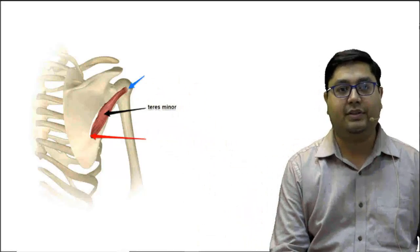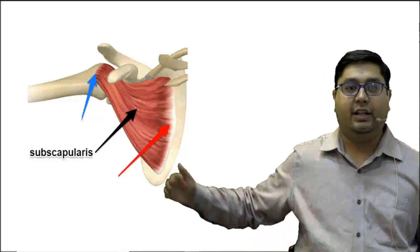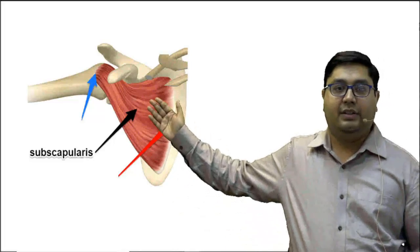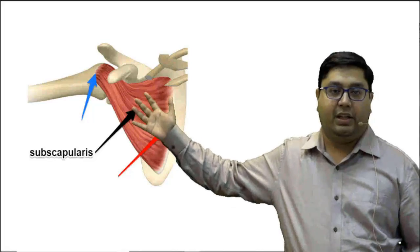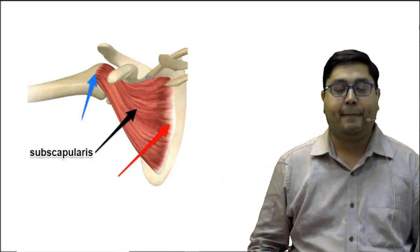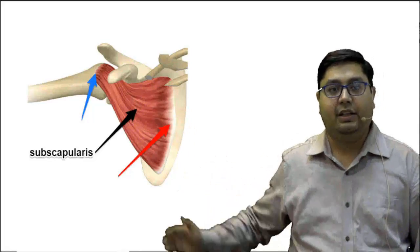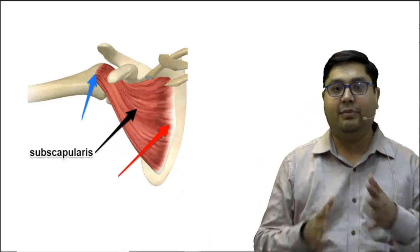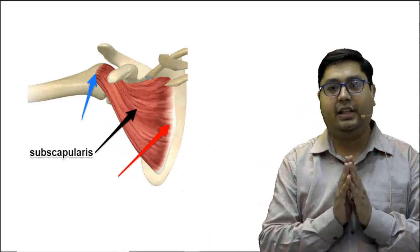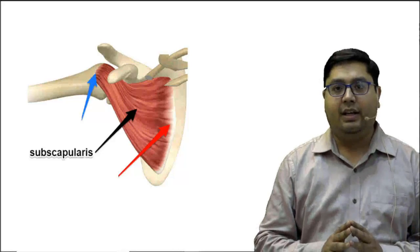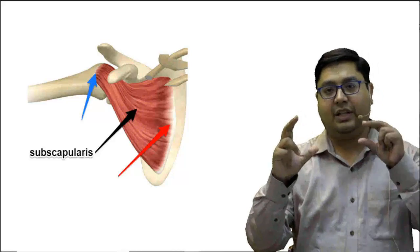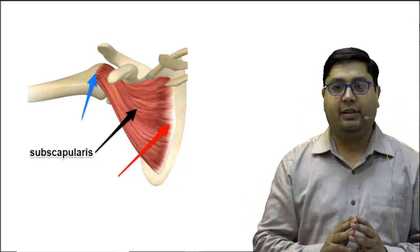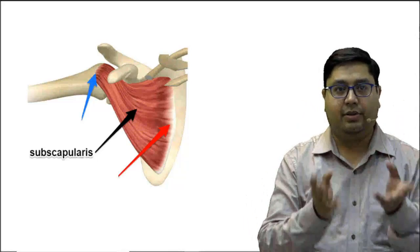These three muscles — supraspinatus, infraspinatus, and teres minor — are all attached on the greater tubercle of the humerus. From the anterior aspect, we have the subscapularis muscle, which takes origin from the subscapular fossa, the ventral part of the scapula, and inserts on the lesser tubercle of the humerus. So the three muscles attach on the greater tubercle while subscapularis attaches on the lesser tubercle.